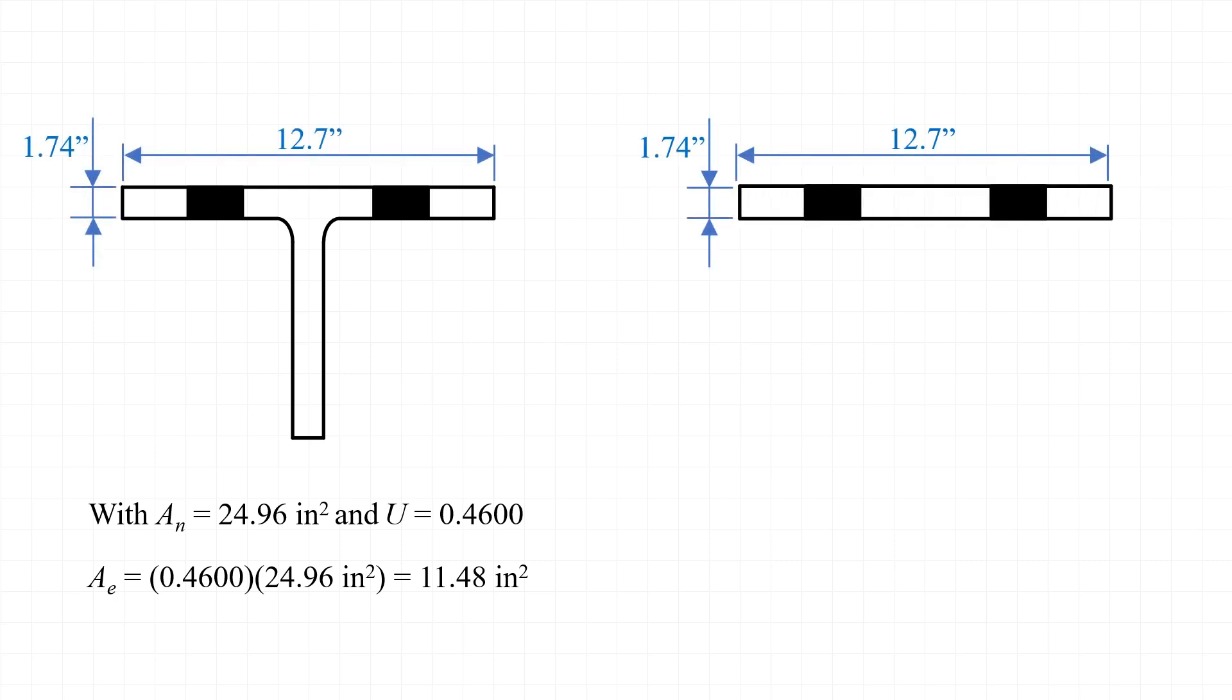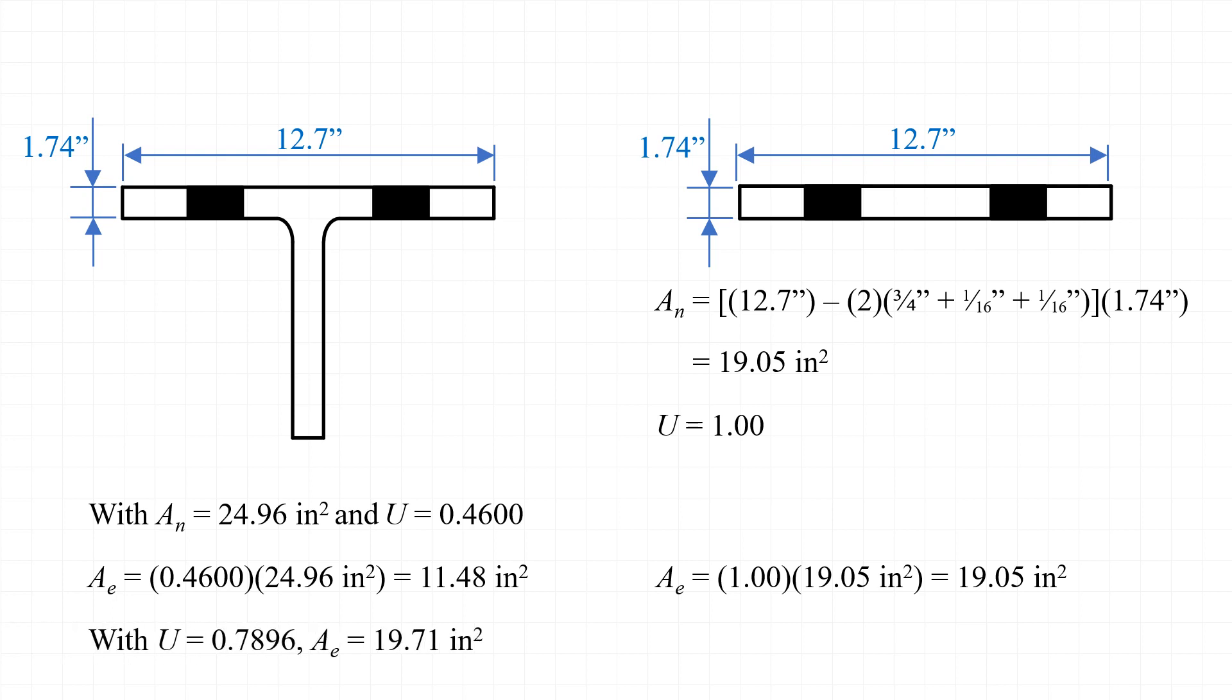Now consider a simple bar with the same dimensions as the flange of the WT6x95. If we calculate the net area of this hypothetical bar, we would find that An is equal to 19.05 inches squared. In this case, however, the shear lag reduction coefficient, U, would be equal to 1.0, and the effective net area, Ae, would be 19.05 inches squared. From a physical point of view, it makes little sense for this hypothetical bar to have a higher strength than the WT section. Thus, a lower bound exists for the shear lag reduction coefficient to address situations like this.